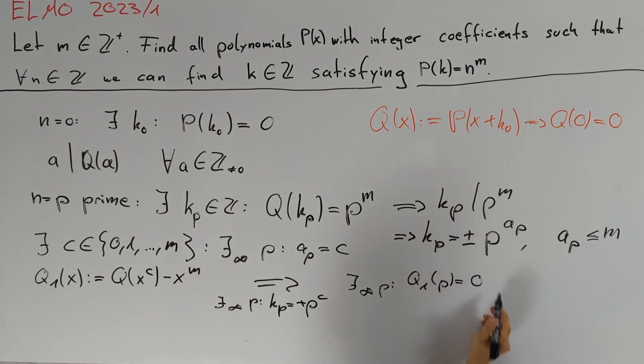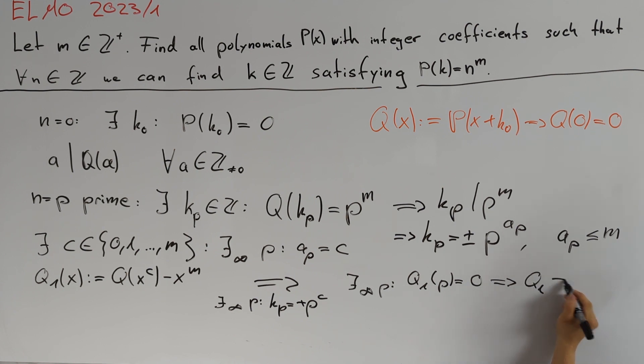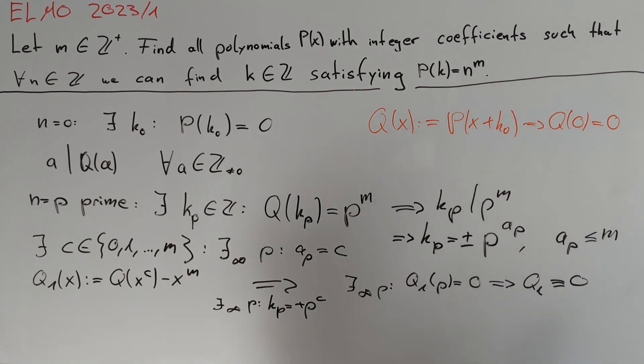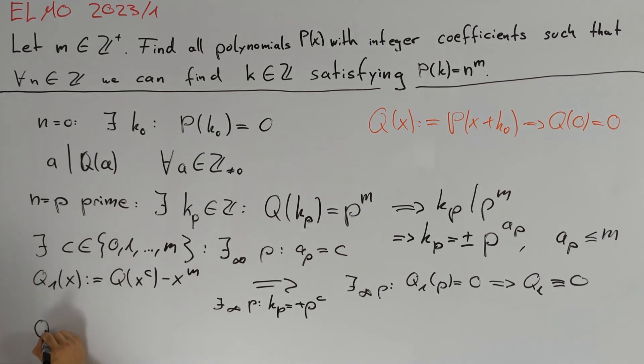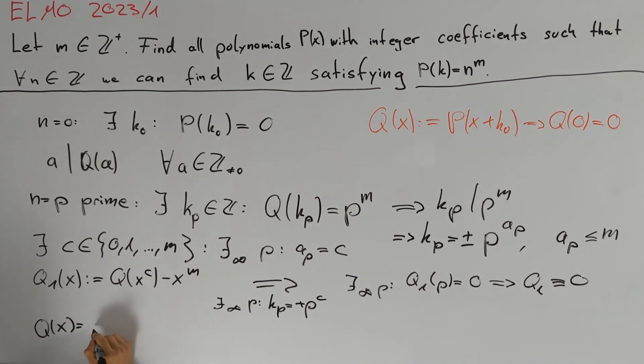And therefore since Q is a polynomial we conclude that Q₁ must be the zero polynomial. In this case we conclude that Q(x) equals x to the power of m divided by c.